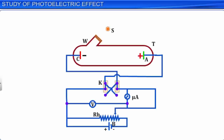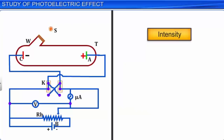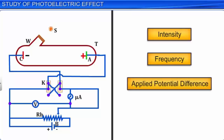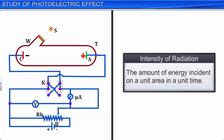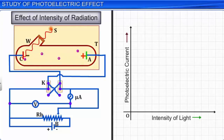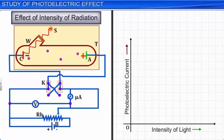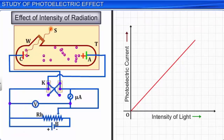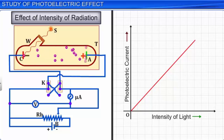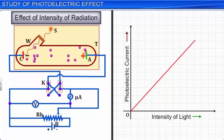Using this experimental arrangement, let us now study the variation of photoelectric current when we vary the intensity of radiation, frequency of radiation, the applied potential difference between the plates, and the material of the emitter. Intensity of radiation is defined as the amount of energy incident on a unit area in a unit time. As you increase the intensity of light incident on the metal plate, the resulting photoelectric current increases proportionally, because as the intensity of light increases, the number of photons incident per second on the metal plate increases, resulting in more emitted electrons and hence increased photoelectric current.